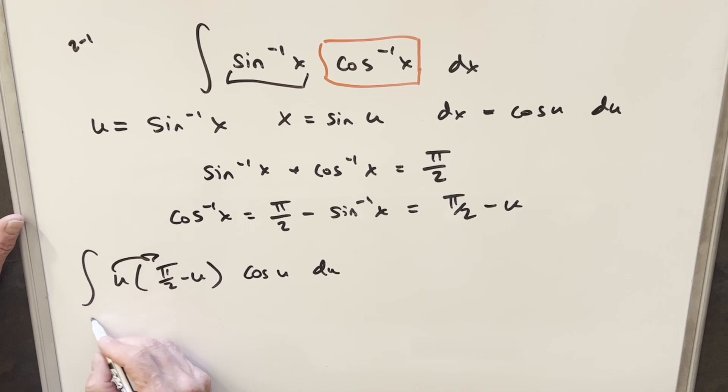I think I'll just distribute in this u. So we're going to have π over 2 u and then multiplying u times minus u, we're going to have minus u squared all times cosine of u du.